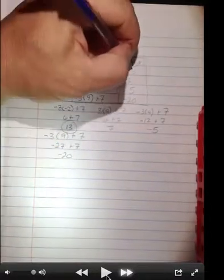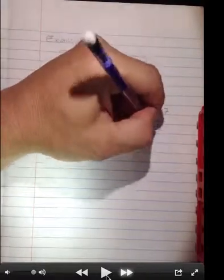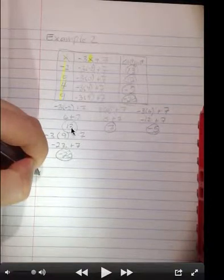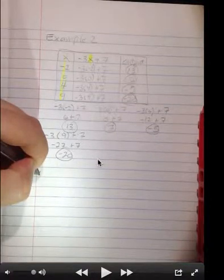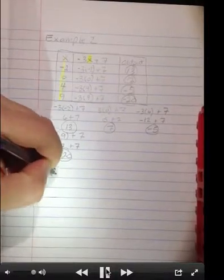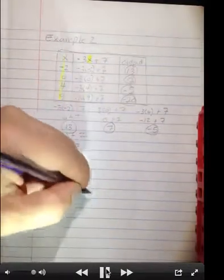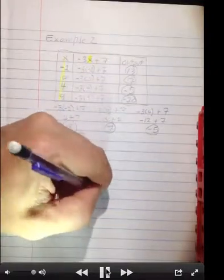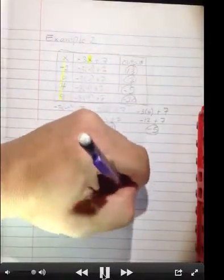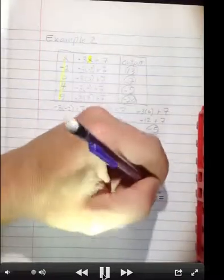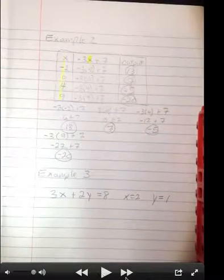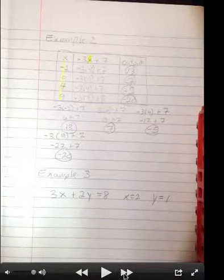For example 3, in that last part I was just showing where the output numbers came from. For this last example, we're going to be given an equation and values for the variables and asked to determine do these values create a solution. So the equation is 3x plus 2y equals 8, the values are x equals 2 and y equals 1.